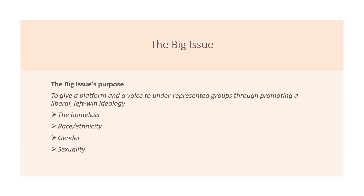We're going to start with the Big Issue, and with any Big Issue question I think it's really helpful to start with the Big Issue's purpose. From a media studies perspective, the Big Issue is designed to give a platform and a voice to underrepresented groups in society, particularly through promoting a liberal left-wing ideology. With that in mind, you can focus on four particular groups who are under or misrepresented in society that the Big Issue seeks to address: the homeless, racial or ethnic groups, gender and sexuality. This provides a structure for your answer.